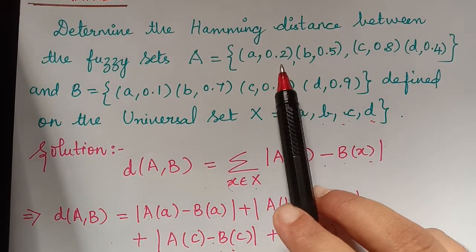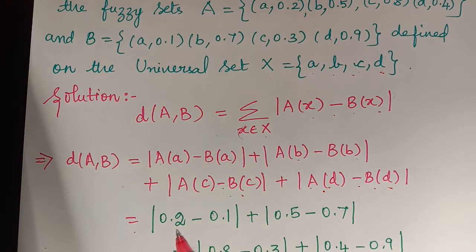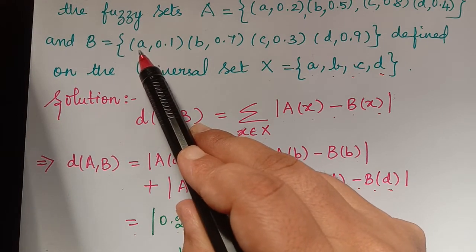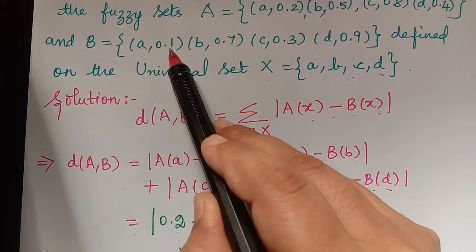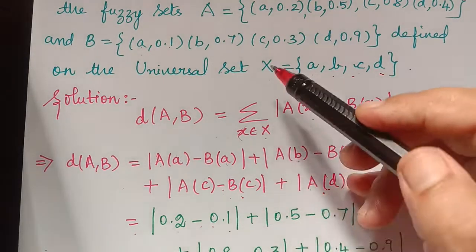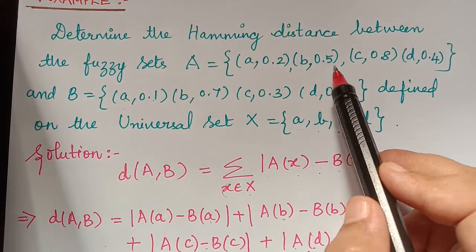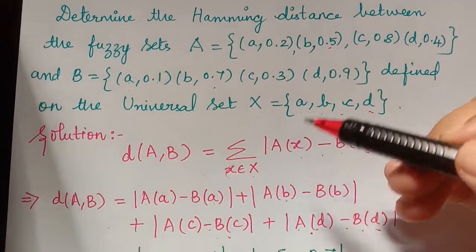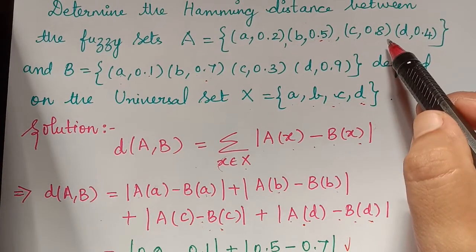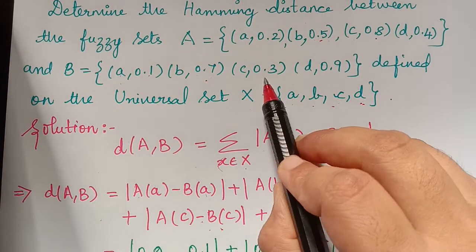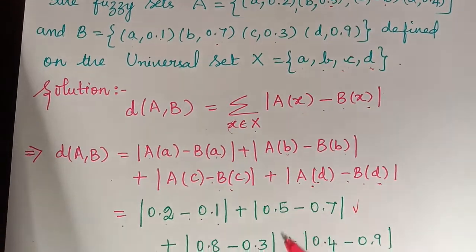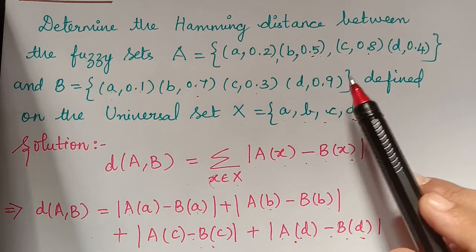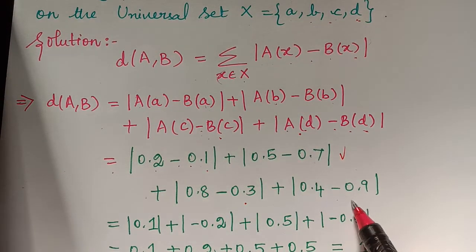A(a), the membership grade of element a in fuzzy set A, is 0.2, and B(a) is 0.1, so we have modulus of 0.2 minus 0.1. For b, the membership grades are 0.5 and 0.7, giving 0.5 minus 0.7. Then we have 0.8 minus 0.3 for c, and 0.4 minus 0.9 for d.